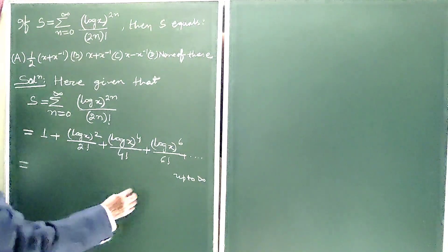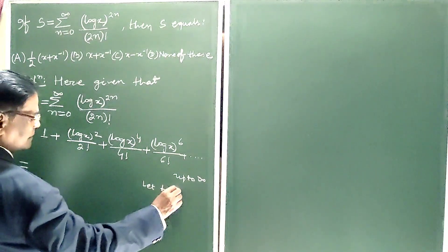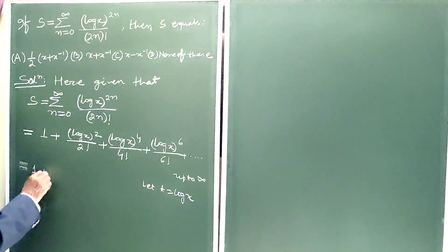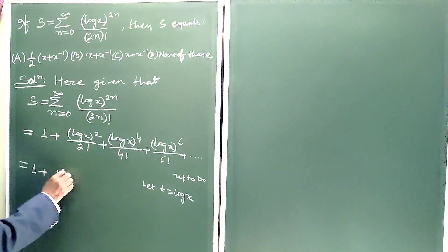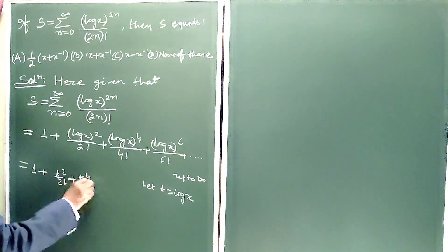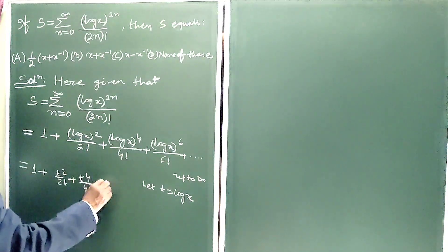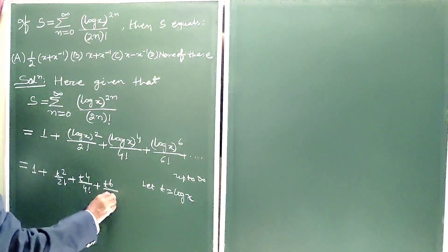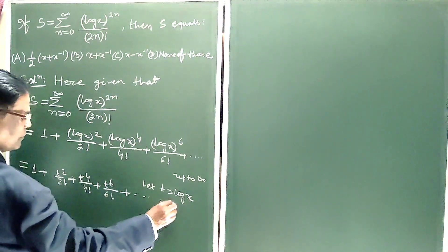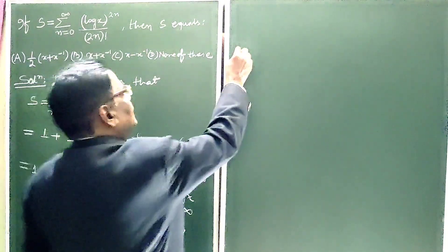This is equal to — let t equal to log x. So the series becomes 1 plus t squared by 2 factorial plus t to the power 4 by 4 factorial plus t to the power 6 by 6 factorial plus dot dot dot up to infinity.